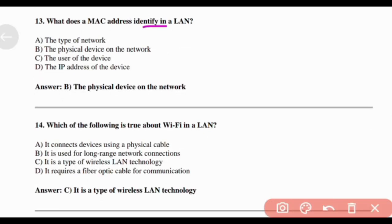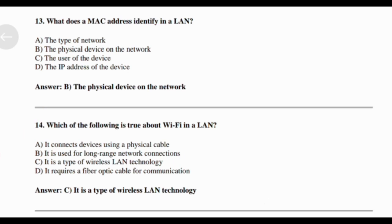What does a MAC address identify in a LAN? Answer: Option B/D — A physical device on the network. Which of the following is true about Wi-Fi in a LAN? Answer: Option C — It is a type of wireless LAN technology.